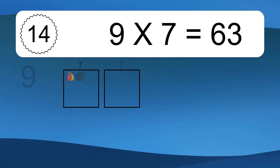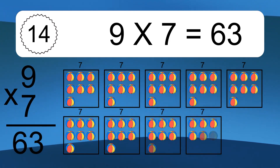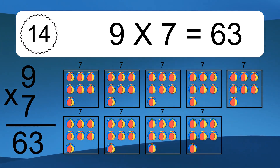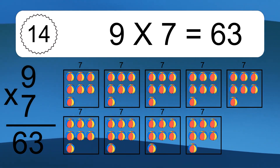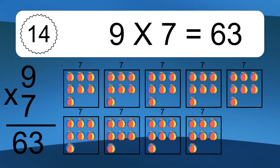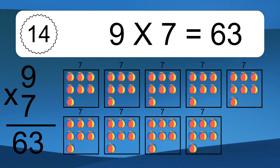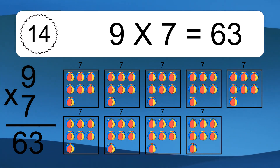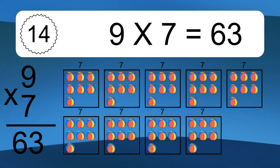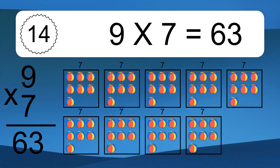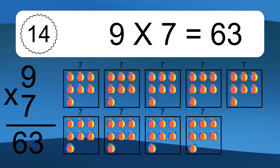9 times 7 equals what? 9 times 7 equals 63. We have 9 boxes, and each box has 7 colorful balls inside. If you count all the balls in all the boxes together, you will have 9 times 7 balls. This equals 63 balls.